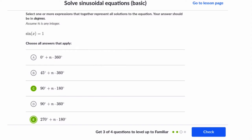Alright, so we've got a problem from a student here. If it's a little bit blurry, don't worry, I'll read it to you. It says, select one or more expressions that together represent all solutions to the equation. Your answer should be in degrees. Okay, so we're working in degrees. Assume n is any integer.